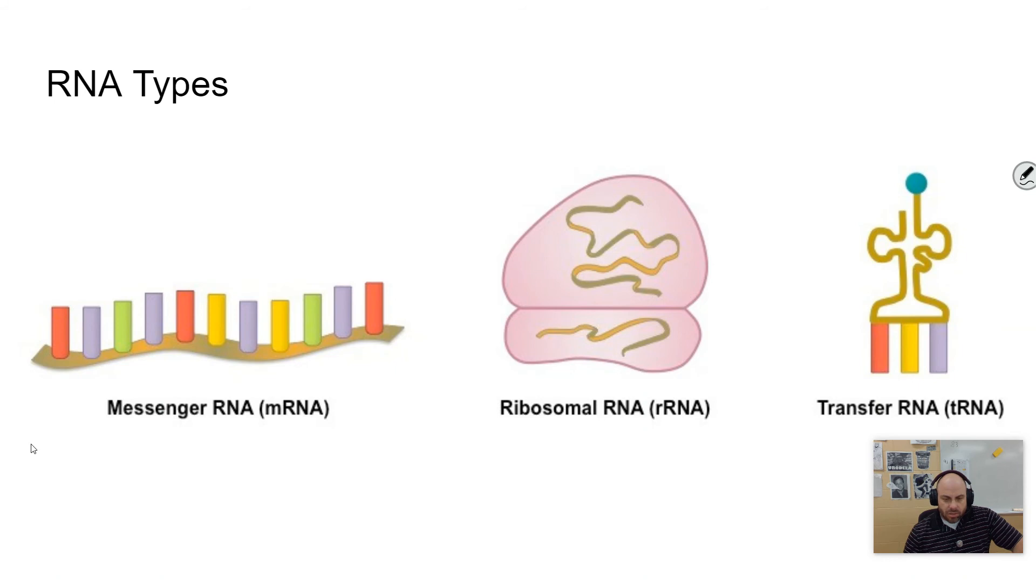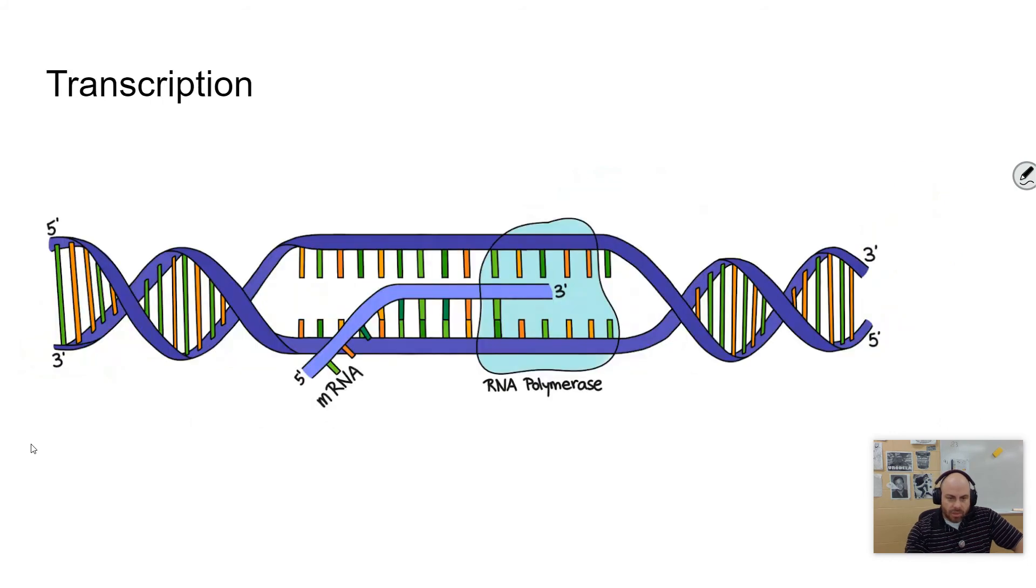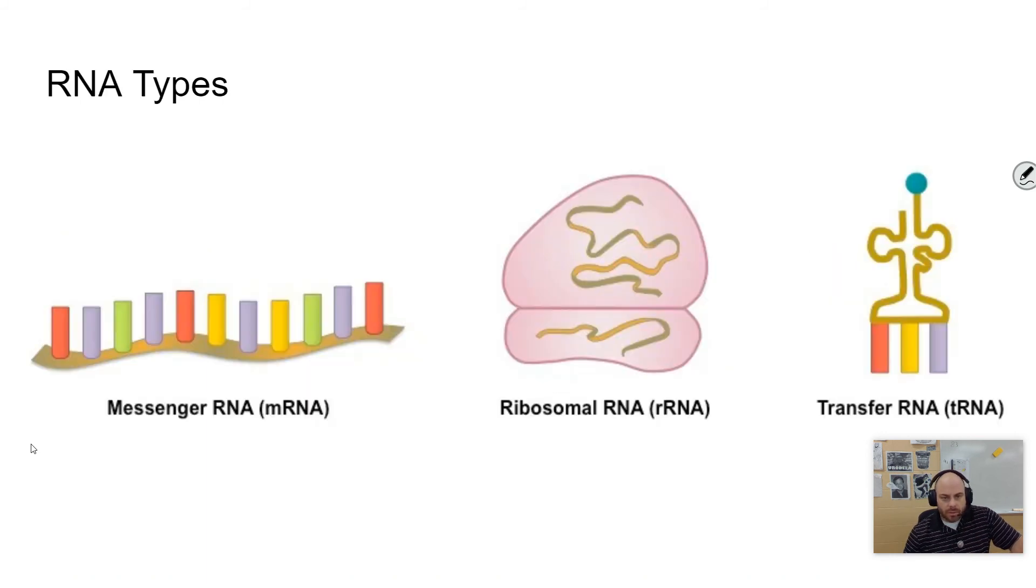This carries the genetic information to the ribosomes, which is where translation is going to occur. And one thing I didn't mention about transcription, transcription occurs in the nucleus with the DNA. Obviously, the DNA doesn't leave the nucleus, and so transcription has to occur inside the nucleus, whereas translation occurs wherever there are ribosomes, which is not inside the nucleus. It's in the cytoplasm or on the endoplasmic reticulum.